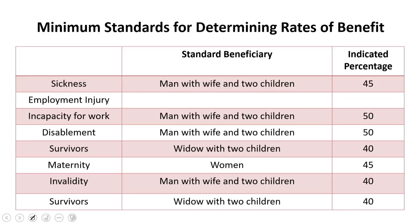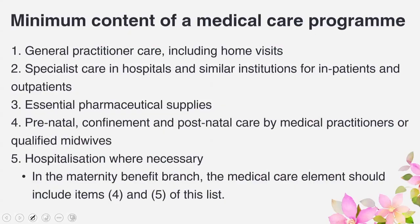The minimum standards for determining rates of benefit include indicated percentages for standard beneficiaries. For sickness — a man with wife and two children; employment injury incapacity — a workman with wife and two children at 50 percent; disabled man with wife and two children; survivors — widow with two children; maternity — women; invalidity — man with wife and two children; survivors — widow with two children.